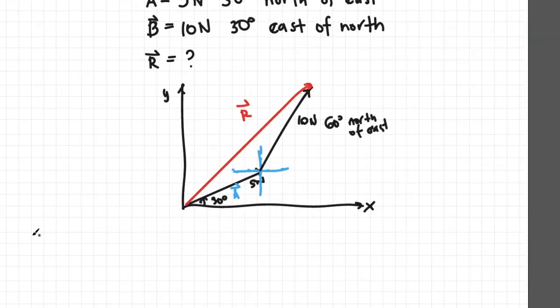Now to get the length or magnitude of the resultant vector, we use the law of cosines.